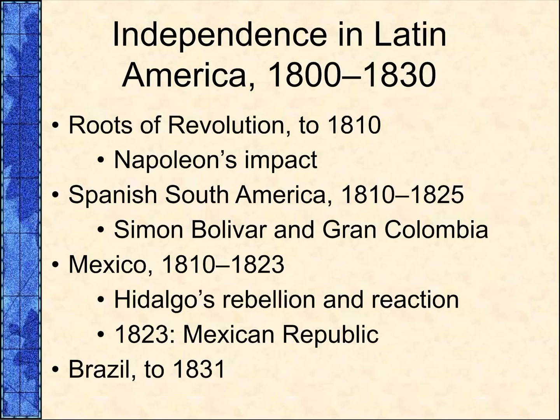In Spanish South America, a Creole-led revolutionary junta declared independence in Venezuela in 1811. Spanish authorities were able to rally free blacks and slaves to defend the Spanish Empire because the junta's leaders were primarily interested in pursuing the interests of Creole landowners. This is where Simón Bolívar emerged as a leader of the Venezuelan revolutionaries, using the force of his personality to attract new allies, including slaves and free blacks.